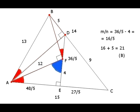The length of segment DF equals 36 over 5 minus 4 equals 16 over 5. And the answer to this problem is B.